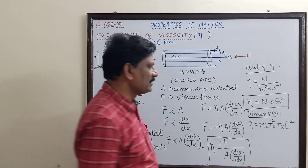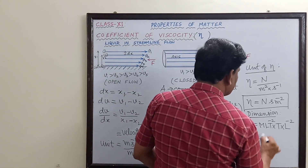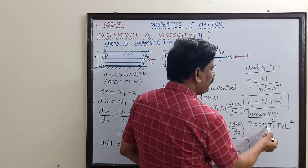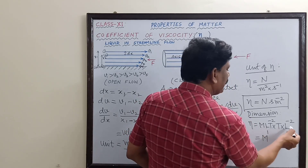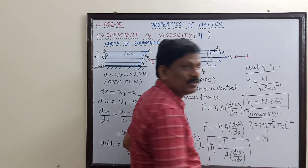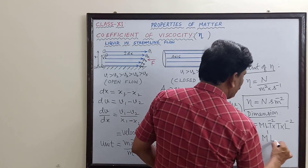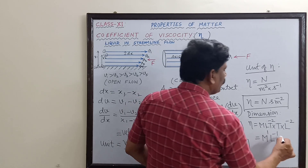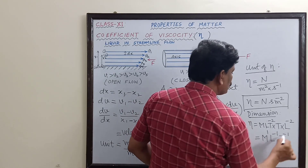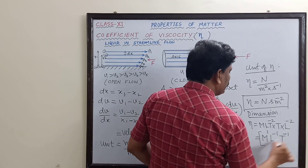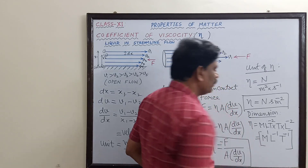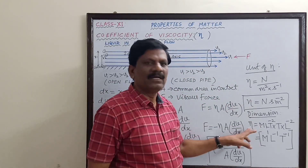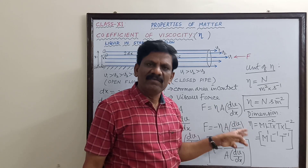Adjusting the terms: M¹, L¹·L⁻² = L⁻¹, and T⁻²·T¹ = T⁻¹. So the dimension of the coefficient of viscosity is M·L⁻¹·T⁻¹.